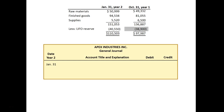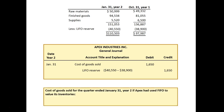Year 1 shows a LIFO reserve of $38,900 and Year 2 shows $40,550. The difference means cost of goods sold would be debited — increasing expense by $1,650 — and we would credit the LIFO reserve for $1,650. Cost of goods sold for the quarter ending January 31, Year 2, if Apex had used FIFO, would be $250,000 minus $1,650, giving us $248,350.